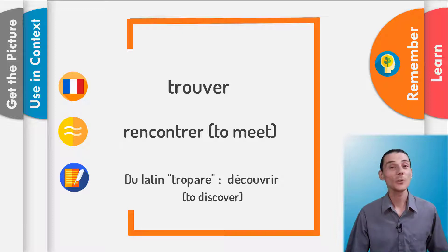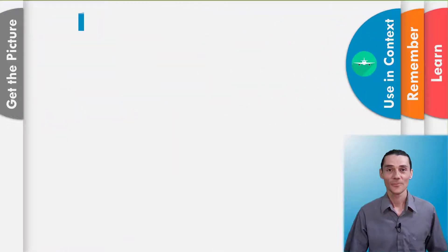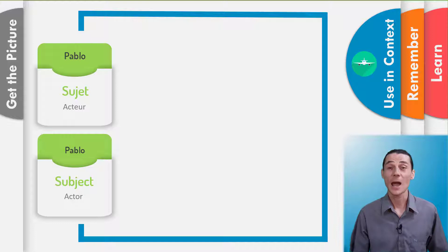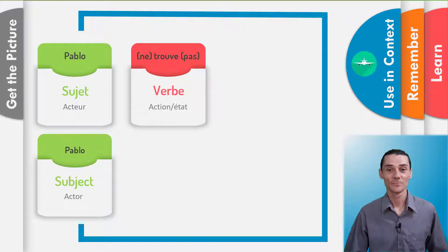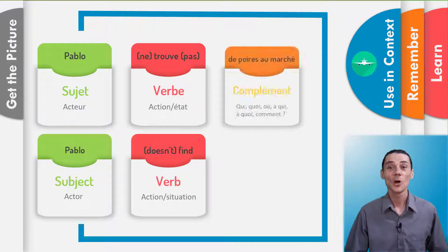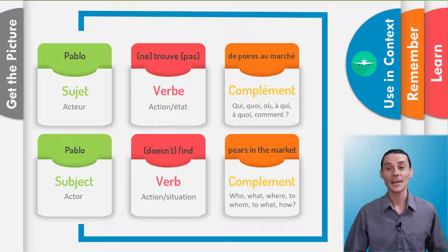Now what do we want to do? We want to use it in context, because if you use it in context, you will remember it. Pablo — it's the subject, the actor of the phrase. Pablo. Ne trouve pas — it's the verb. Ne trouve pas — doesn't find. De poire au marché. Je répète: Pablo ne trouve pas de poire au marché. Pablo doesn't find pears in the market.